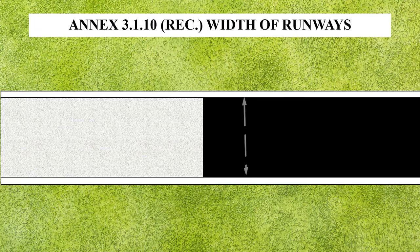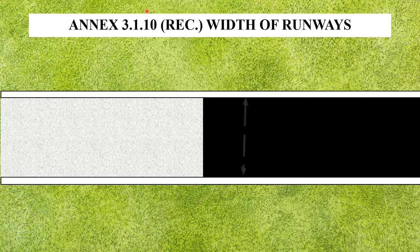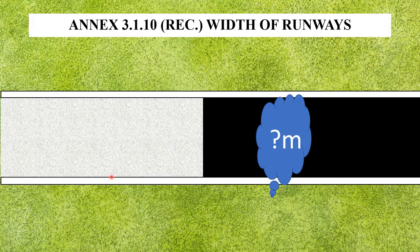For explanatory purposes, the width of the runway is the distance from the white runway edge marking on one side to the white runway edge marking on the other side. If you are standing in the middle of the runway, the distance from your left white edge marking to your right white edge marking is your runway width.